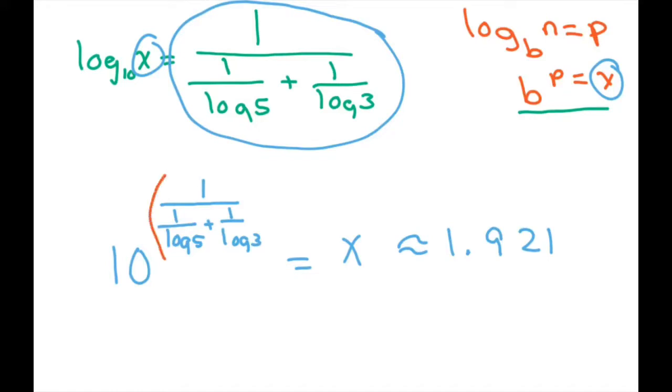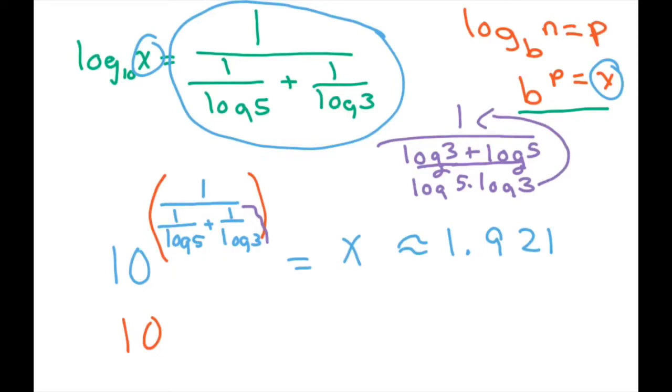If you have trouble putting this in the calculator, you could rewrite it using a common denominator. With a common denominator of log 5 times log 3, you get log 3 plus log 5 in the numerator. Since we're dividing by 1, you can flip it. So you could write it as log 5 times log 3 divided by log 3 plus log 5. This might be easier to put in the calculator.